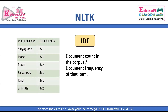Here you can see that the IDF (inverse document frequency) for 'satyagraha' is 3 divided by 1. The total count of documents is 3 (documents 1, 2, and 3), and 'satyagraha' appears in only document 1 — that's why IDF is 3/1. Same with 'place' — IDF is 3/1. Now 'fraud' appeared in document 1 and document 2, so the inverse document frequency for 'fraud' will be 3 divided by 2.